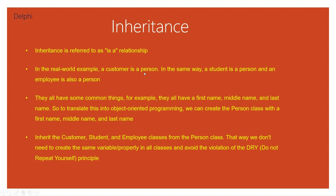In a real-world example, a customer is a person. In the same way, a student is also a person. So we can say that student, employee, and customer are all persons — they all have some common things, for example, first name, middle name, and last name. To translate this into object-oriented programming, we create a Person class with first name, middle name, and last name, then inherit the Customer, Student, and Employee classes from the Person class. That way we don't need to create the same variables or properties in all child classes, avoiding violation of the Do Not Repeat Yourself principle.